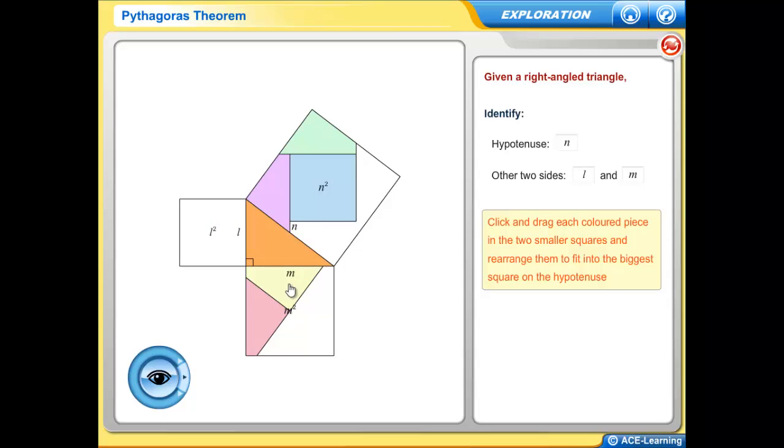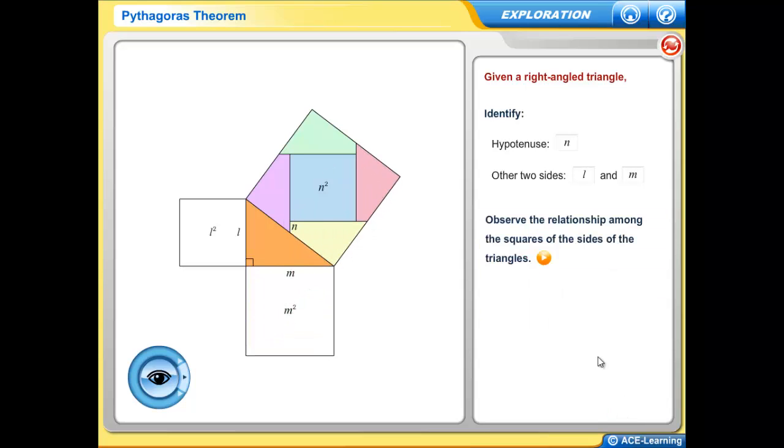A tangram or puzzle adds fun to the exploration. Then, with the aid of animation, the student sees the relationships among the sides of the right-angled triangle. Now the student has come to a simple conclusion.